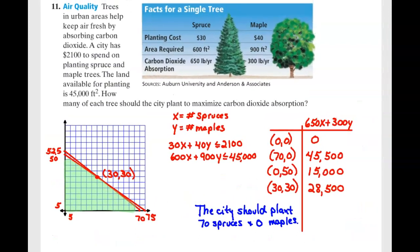Okay, looking at number 11. Number 11 says trees in an urban area help keep air fresh by absorbing carbon dioxide. A city has $2,100 to spend on planting spruce and maple trees. The land available for planting is 45,000 square feet. How many of each tree should the city plant to maximize carbon dioxide absorption?